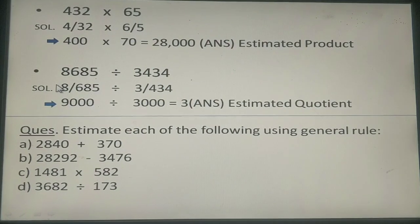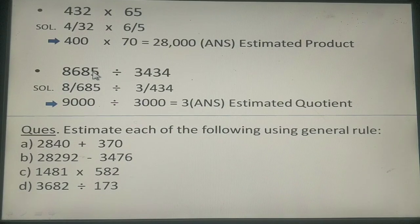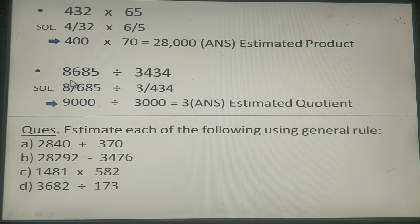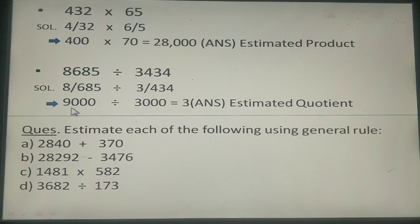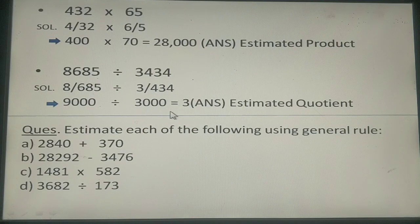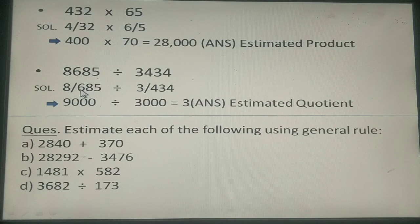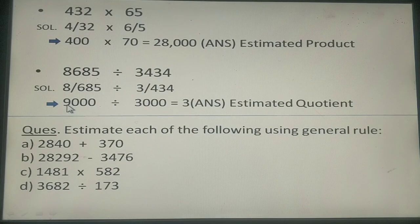In example number 4. 8685 divided by 3434. So putting a slash here. Putting a slash here. Very easily put 3 zeros after the slash. Put 3 zeros after the slash here. So now we have to see this side. This is 6 which is greater than 5. So adding 1 to the number 8 here you will get 9,000.